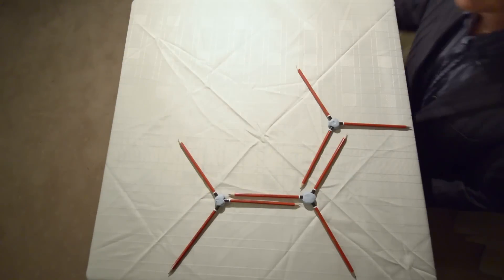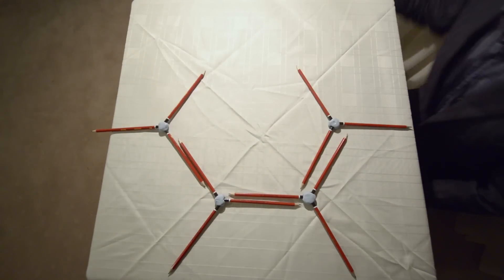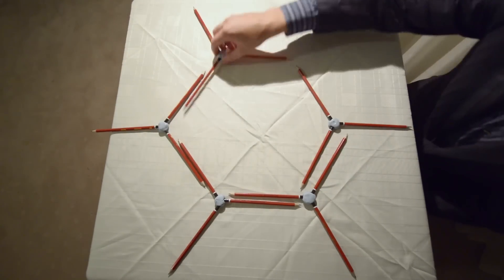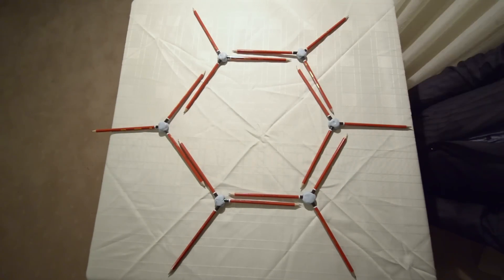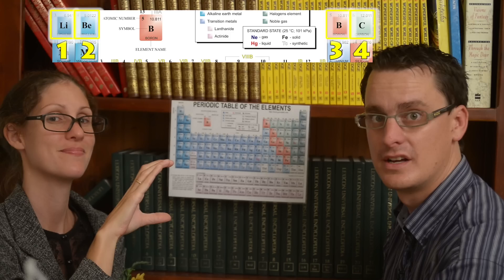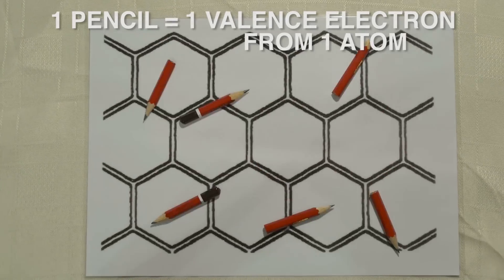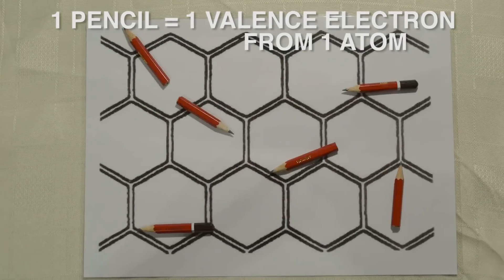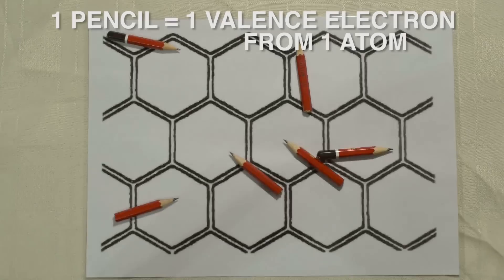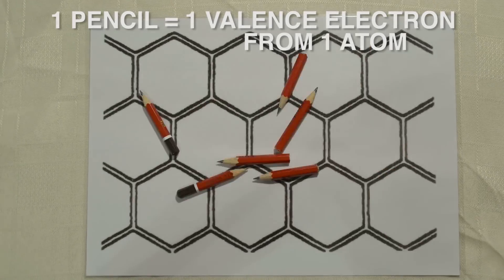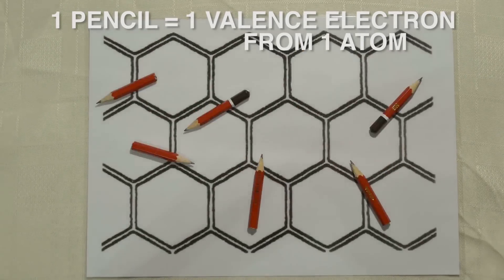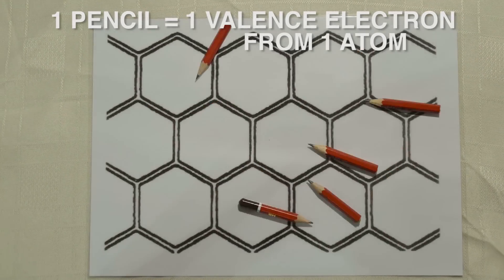Here, each ball represents the nucleus of the atom, and each pencil is a valence electron forming a molecular bond. Remember that carbon has four valence electrons available — it uses three to make the hexagon structure, but there is still one valence electron left over. The extra electron is actually free to move around its hexagon sheet.